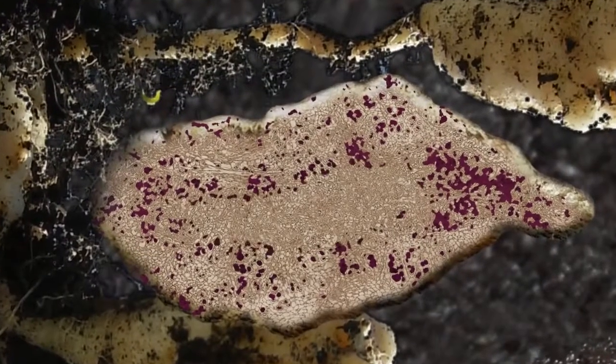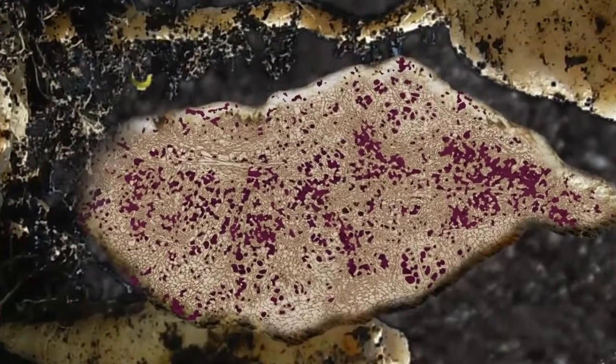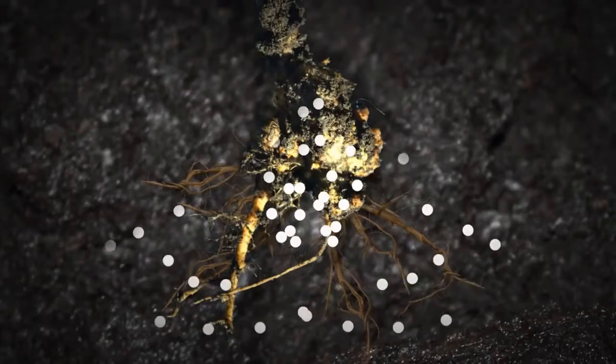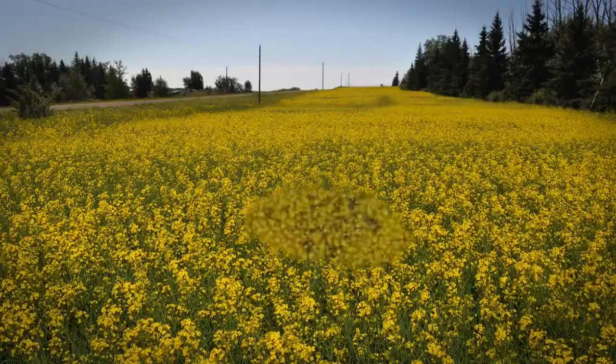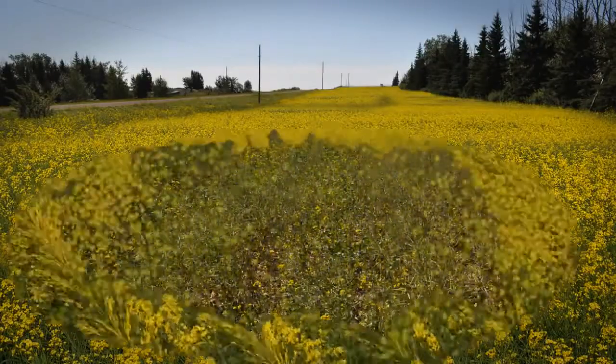As cells become infected and enlarged, the root no longer functions properly in the absorption and translocation of water and nutrients to the above-ground parts of the plant. This is where yield is lost.